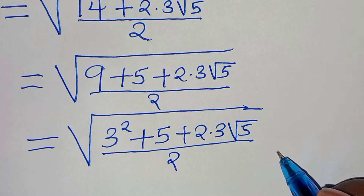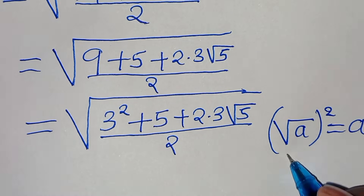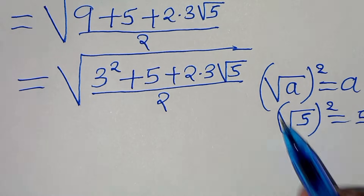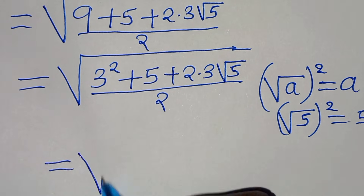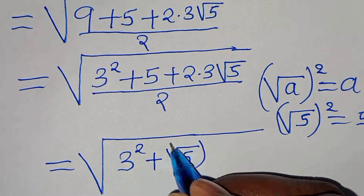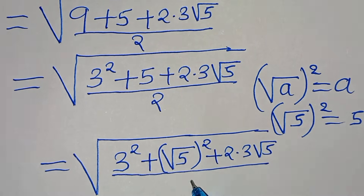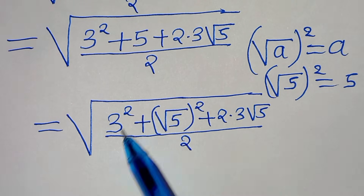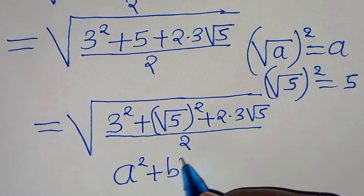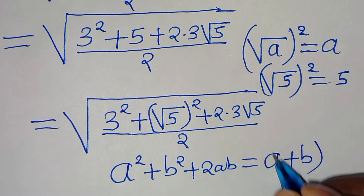Given that the square root of a to the power of 2 equals a, we can also express 5 as square root of 5 to the power of 2. Substituting square root of 5 squared where we have 5, we get the square root of 3 squared plus square root of 5 squared, plus 2 times 3 times square root of 5, all divided by 2. This is in the form of a squared plus b squared plus 2ab, which we can express as a plus b to the power of 2.